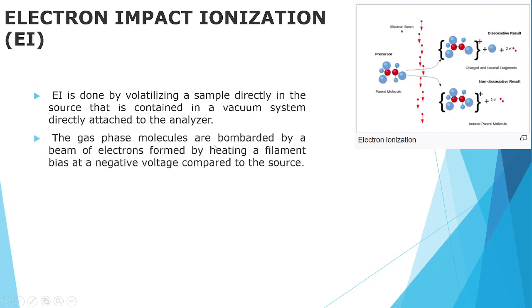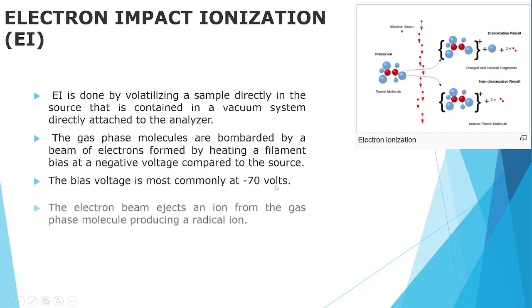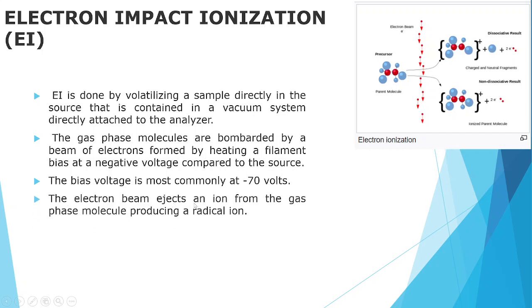The gas phase molecules are bombarded by a beam of electrons formed by heating a filament bias at a negative voltage compared to the source. The bias voltage is most commonly at minus 70 volts. The electron beam ejects an electron from the gas phase molecule producing a radical ion.